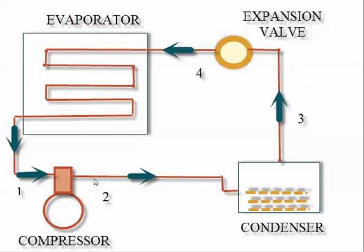This high pressure, high temperature refrigerant vapor is then led to a condenser, where it rejects the latent heat and is converted into a liquid phase at stage 3.